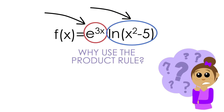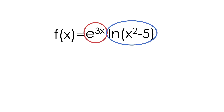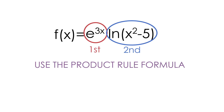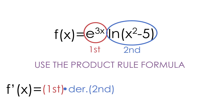This is why we have to use the product rule. We're going to label these two things the first and the second. We'll label E to the 3x as our first thing being multiplied, and the natural log of x squared minus 5 as the second thing being multiplied. Once we do this, we can use the product rule formula. The formula for the derivative using the product rule is equal to the first thing multiplied by the derivative of the second, plus the derivative of the first multiplied by the second.